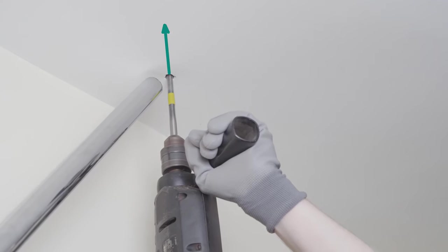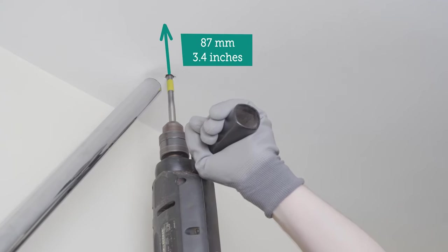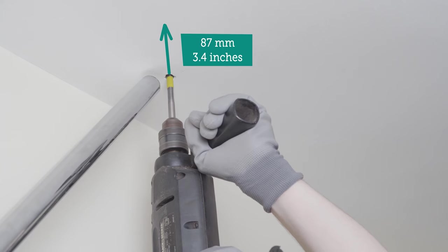We also need to pay attention to the depth of the hole. For our suspension solution, for example, we need a hole with a depth of about 9 centimeters. This is not a problem for most ceilings. However, we should still make sure that the ceiling is thick enough so that we don't accidentally drill a hole into the neighbor's living room.